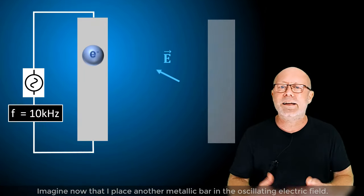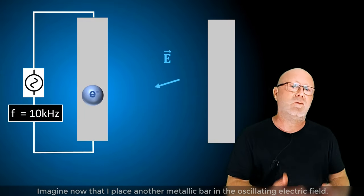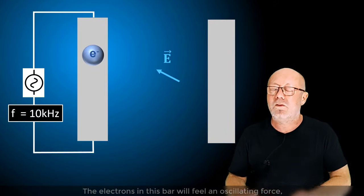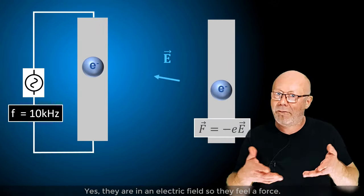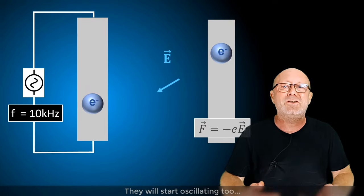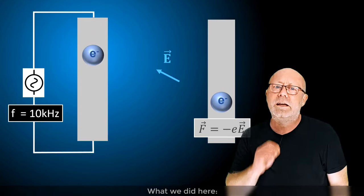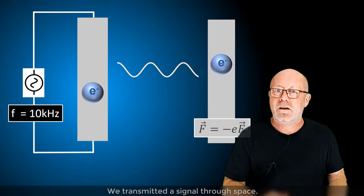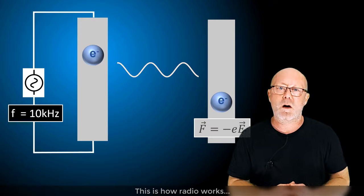Imagine now that I place another metallic bar in the oscillating electric field. The electrons in this bar will feel an oscillating force. Yes, they are in an electric field, so they feel a force. They will start to oscillate too. What we did here is we transmitted a signal through space. This is how radio works.